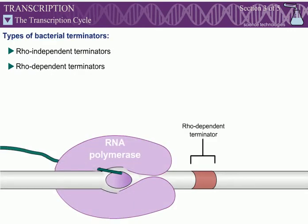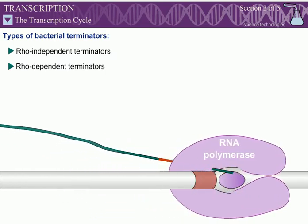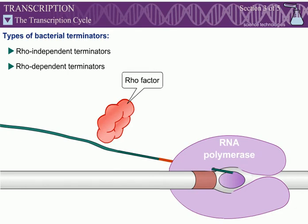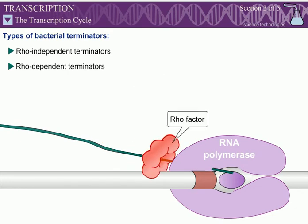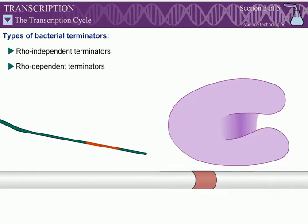Rho-dependent terminators are less well characterized, but optimally consist of stretches of about 40 nucleotides that do not fold into a secondary structure in the RNA transcript. Rho-dependent terminators require the action of the rho-factor, a ring-shaped hexameric protein. The rho-factor binds to the transcribed RNA as it exits the polymerase. Using the energy derived from ATP hydrolysis, the rho-factor pulls the RNA from the template and RNA polymerase.